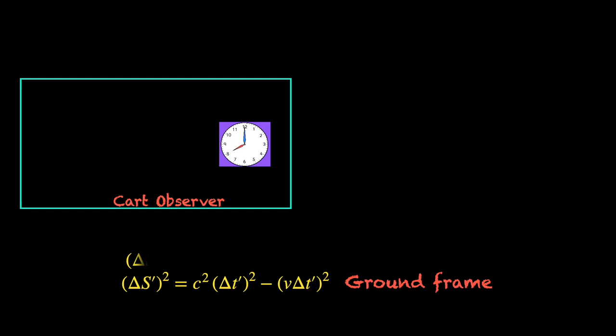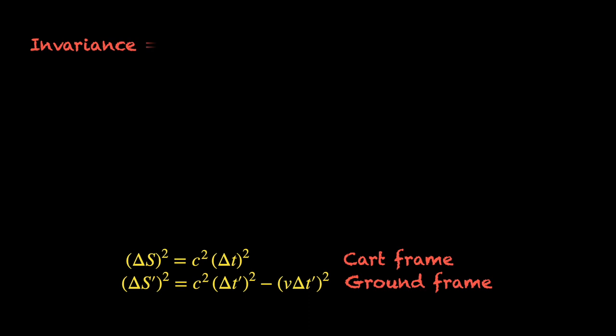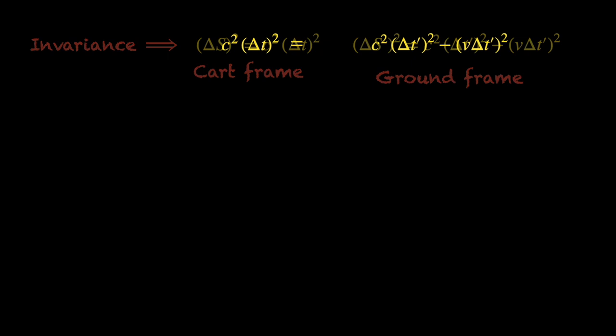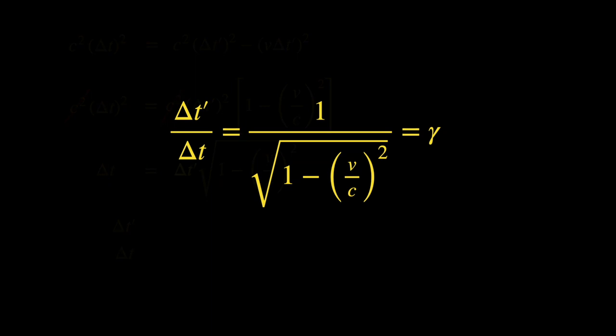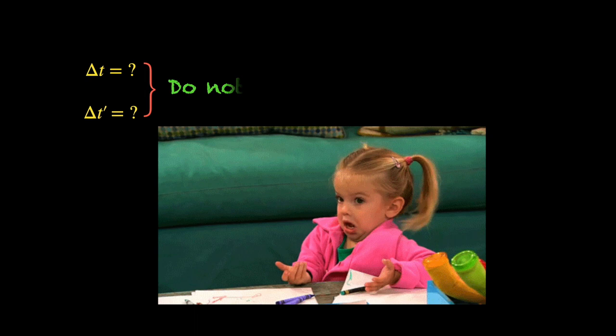Now, the invariance of space-time interval means its value is the same in the ground frame and the cart frame. So, we equate the two, factor out the c-squared delta t-squared from the right-hand side, cancel the c-squared from both sides and take the square root. Can you see the Lorentz factor? Yeah, we are back with the same ratio. Did we consider the photon's journey across the cart and calculate the value of delta t and delta t prime explicitly? No, because their values don't matter. Whatever they are, they will always have the same ratio, the Lorentz factor.